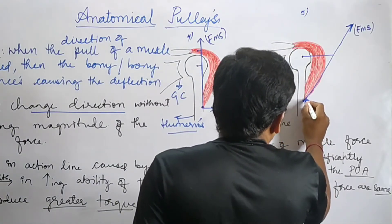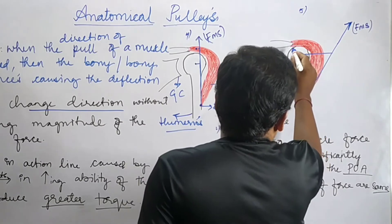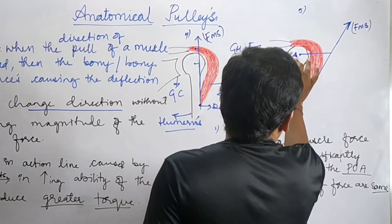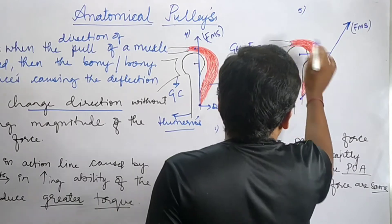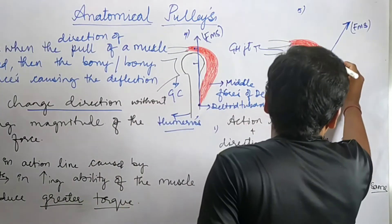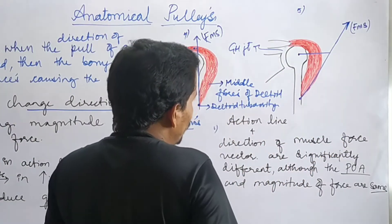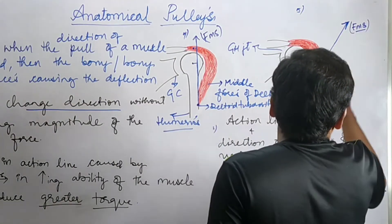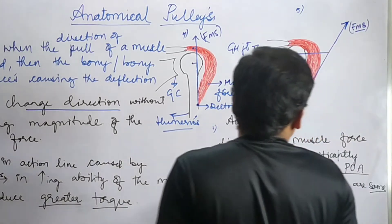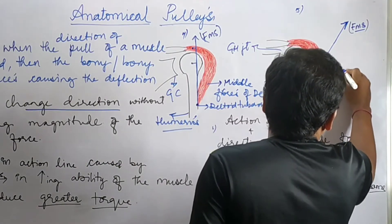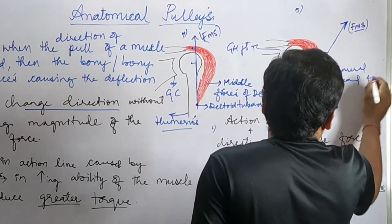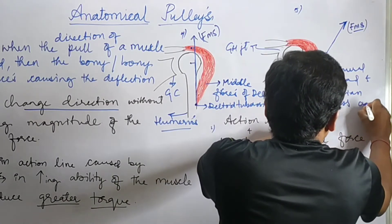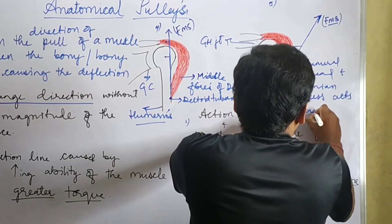As the deltoid muscle passes the actual glenohumeral joint, it is actually wrapped around the round head of the humerus and the acromion. This humerus and the acromion causes the deflection of the fibers, resulting in a force vector — FMS, that is a muscle force vector — in this direction. So the humeral head and acromion process acts as an anatomical pulley.